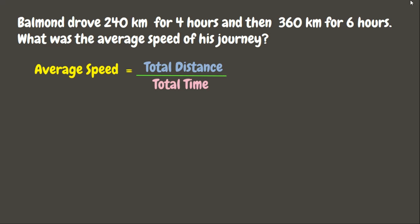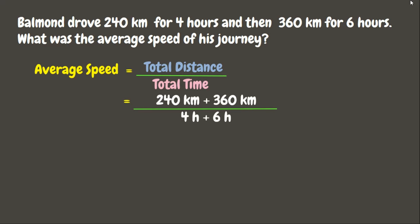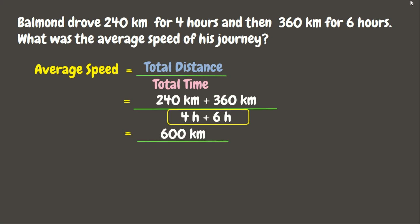Here we can see that the distances and times are both given, so let us simply add them up. Distances: 240 kilometers + 360 kilometers = 600 kilometers. Time: 4 hours + 6 hours = 10 hours. Now divide: 600 divided by 10 = 60 kilometers per hour.